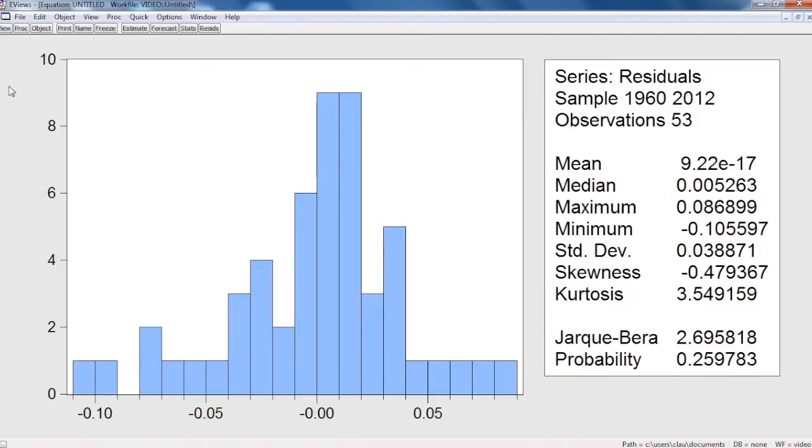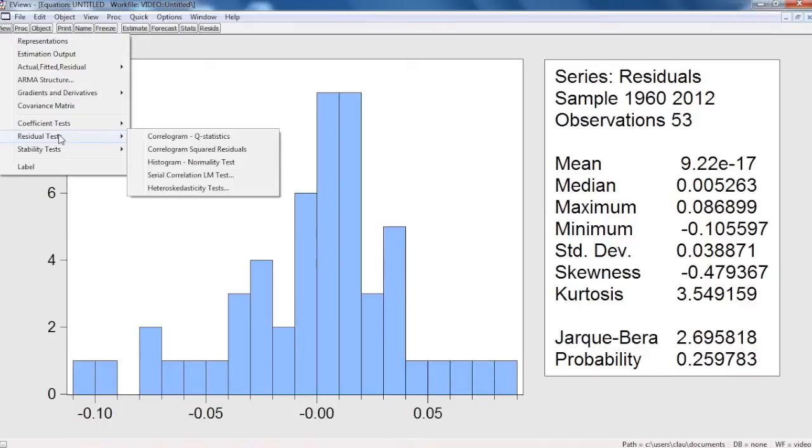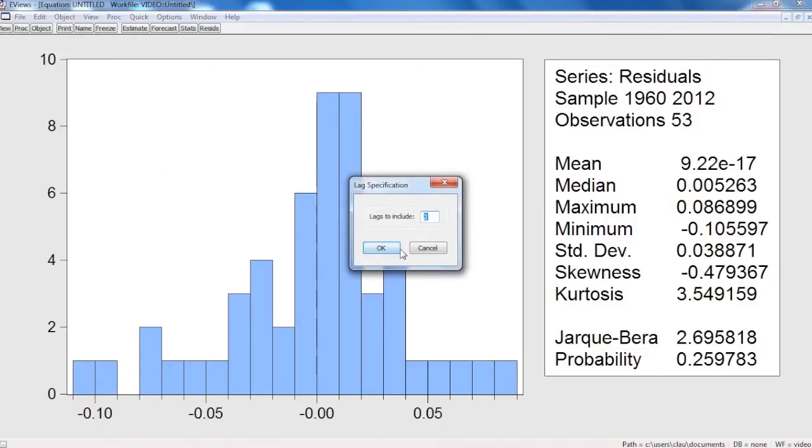It is mandatory to check if the model has the following problems: serial correlation. There are two tests that refer to evaluating serial correlation in the residuals. The LM test, or the Breusch-Godfrey test, with two lags.